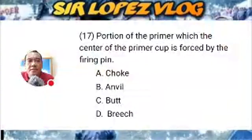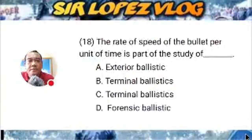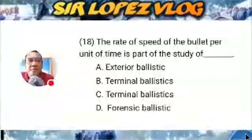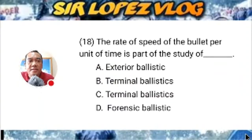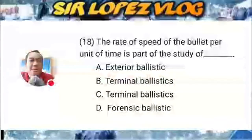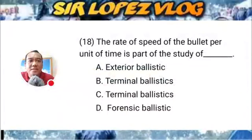Question number eighteen: The rate of speed of the bullet per unit of time is part of the study of which branch? A) exterior ballistics, B) terminal ballistics, C) interior ballistics, or D) forensic ballistics? Choose the best or correct answer.